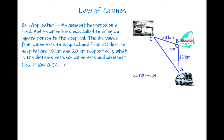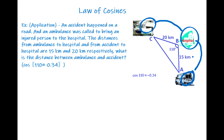For our last question, an application problem: an accident happened on a road and an ambulance was called to bring an injured person to the hospital. The distance from the ambulance to the hospital is 15 km and from the accident to the hospital is 20 km. We need to find the distance between the ambulance and the accident. I'll place the accident at point C, the hospital at point B, and the ambulance at point A. I'll call the unknown distance from A to C as side b.